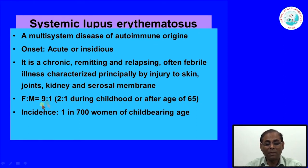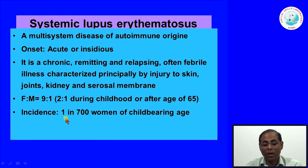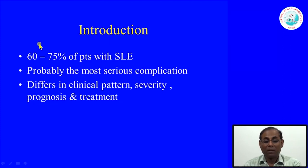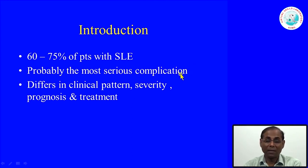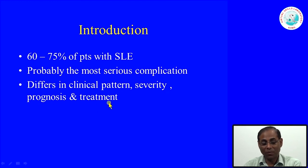Renal involvement in SLE is very important and prognostically significant for understanding disease progression. It is a female-predominant disease with a 9:1 female-to-male ratio, with 2:1 during childhood and after age 65. The incidence is 1 in 700 women of childbearing age. Sixty to seventy percent of SLE patients have kidney involvement, making lupus nephritis the most serious complication. The renal involvement is intriguing because it differs in clinical pattern, severity, prognosis, and treatment.